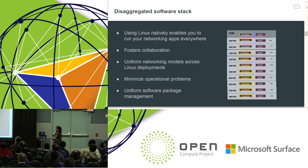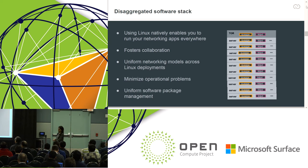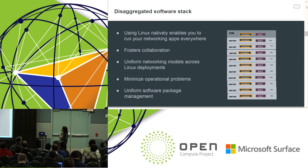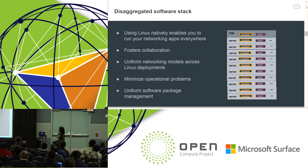We've also heard a lot about disaggregated software stacks. The idea here is if you're using Linux natively, you have the ability to run your networking applications everywhere — they become portable. You're just using the Linux API, so you can carry them onto servers or switches. This forces collaboration between the server and network OS communities. You configure VXLAN the same way on an NOS or on a server, minimizing operational problems. Uniform package management wherever you go, whether on an NOS or a server.